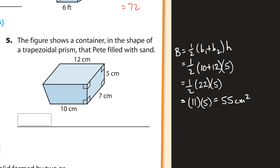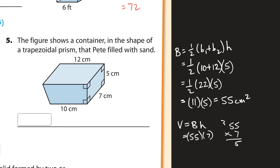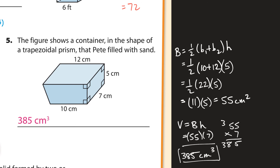The volume is the base area times the height of the prism. The base area is 55 and the height of the prism — the distance between the bases — is 7. So that's 55 × 7 = 385 cubic centimeters. Let's check: 385 cubic centimeters. Correct.